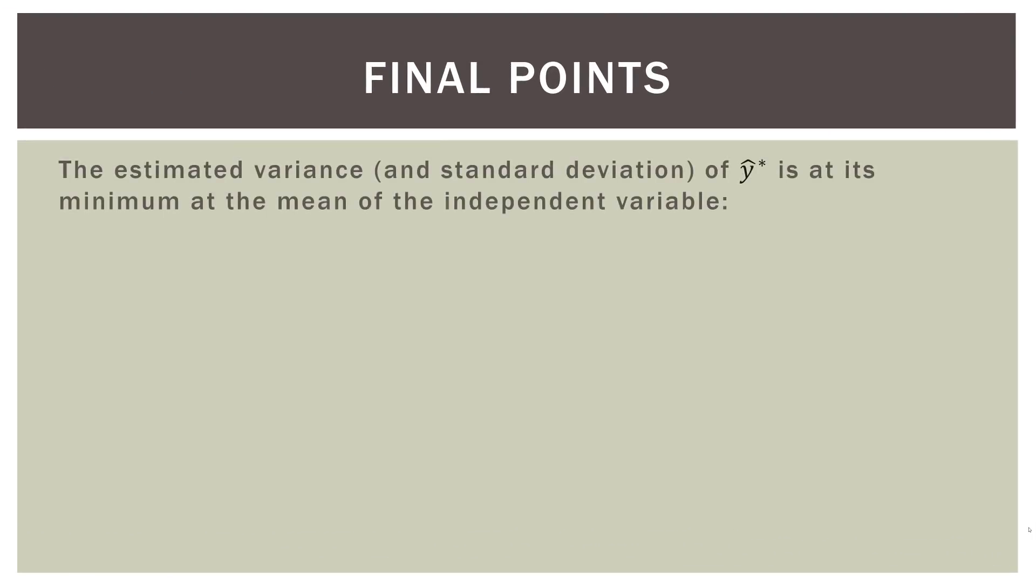So a few final points. The estimated variance, or you can think of it as the width of that confidence interval of y hat star is at its narrowest, or the estimated variance is at its minimum at the mean of the independent variable. So you remember, the confidence interval kind of flared out at the end. Well, the variance is at its smallest at the mean of that independent variable there in the middle, which in this case was $74. That's where the confidence interval is at its most narrow.